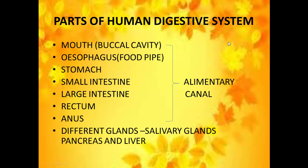We will move on to the parts of the human digestive system. The first part is the mouth or the buccal cavity, next is the esophagus otherwise known as food pipe, then stomach, small intestine, large intestine, rectum and anus. When we put all these parts together, we call them the alimentary canal or the digestive tract. The major glands involved in digestion are the salivary glands, pancreas and liver.